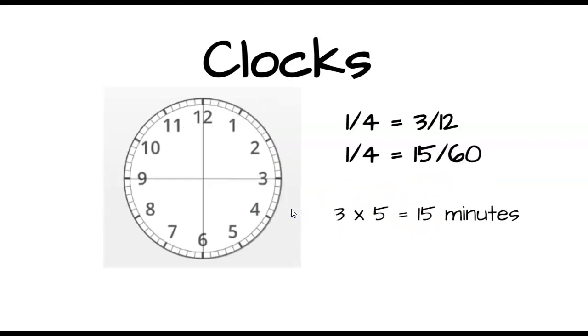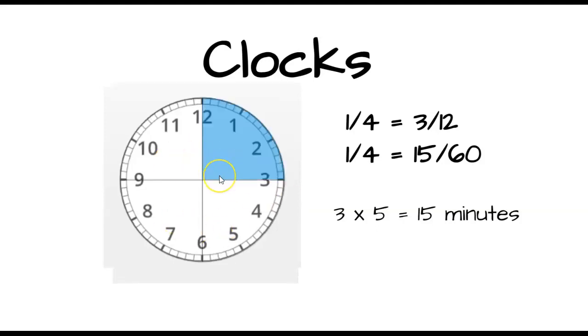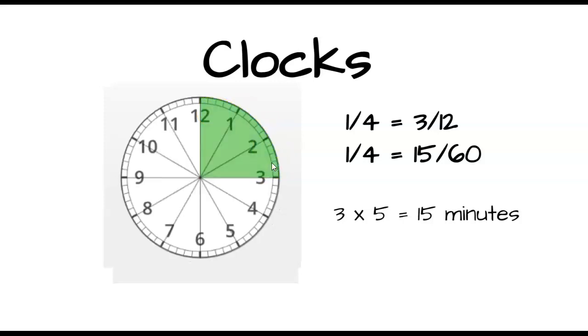We have 1/4. We took the clock, partitioned it into 4 equal pieces. That gave us 1 out of the 4 pieces. Looks pretty good. This one, we know pretty well. But we have these lines here. We can partition it even further into 3/12.